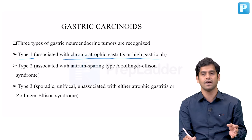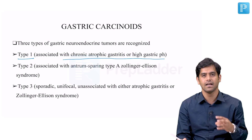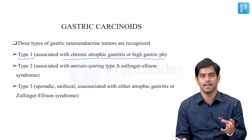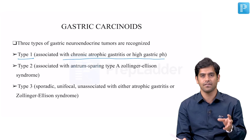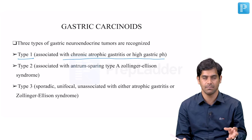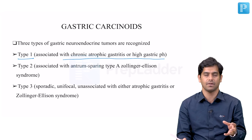There is a lot of gastrin being produced, and this gastrin stimulates the enterochromaffin cells — predominantly the H2 cells — producing histamine. They tend to gain autonomy over time and these are the histamine-producing tumors. That is Type 1.